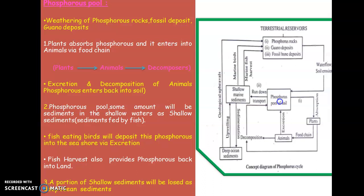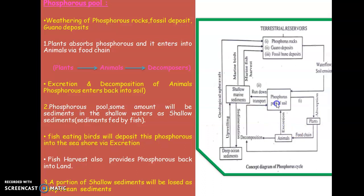Once phosphorus enters the soil, plants — which dwell in soil — absorb it and utilize it for various life activities. Phosphorus then enters animals through the food chain, since animals depend on plants for food. Through excretion and decomposition of both animals and plants, the phosphorus gets returned back into the soil.